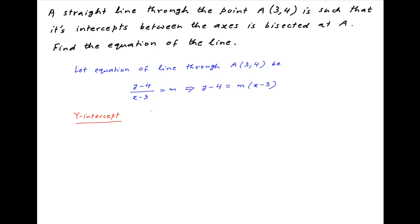Now the y-intercept of this line can be obtained by setting x equal to 0. Therefore y minus 4 is equal to minus 3m, which implies that y is equal to 4 minus 3m. Therefore the coordinates of the y-intercept are (0, 4 minus 3m). Let's denote this point as P.